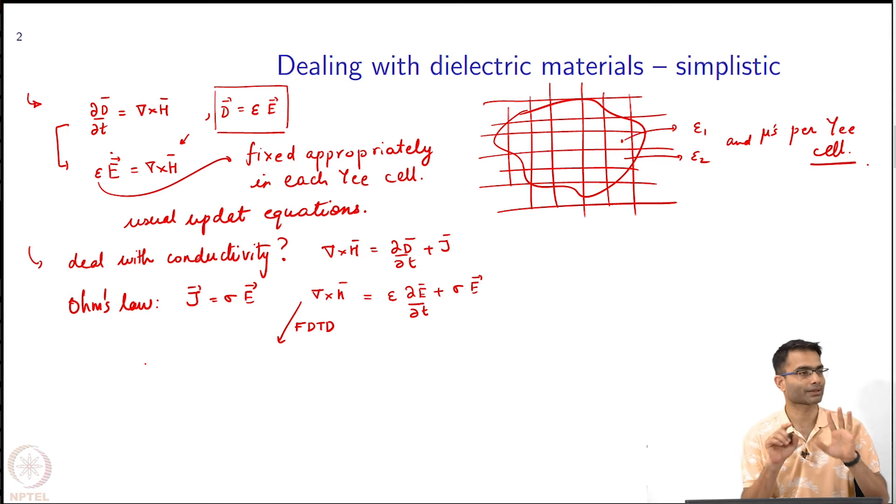Supposing, I am going to remove the vector sign, it is understood by now. Curl of H, supposing I am updating the electric field at every integer instance, that is what we are doing. Then the magnetic field is updated at half integer.